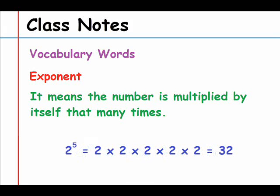Another example: if you have 2 with a 5 as the exponent, that means 2 is multiplied by itself 5 times — so 2 times 2 times 2 times 2 times 2 — which equals 32.